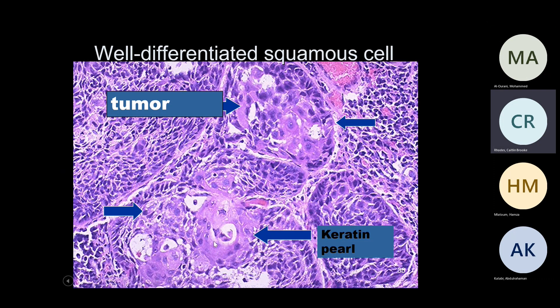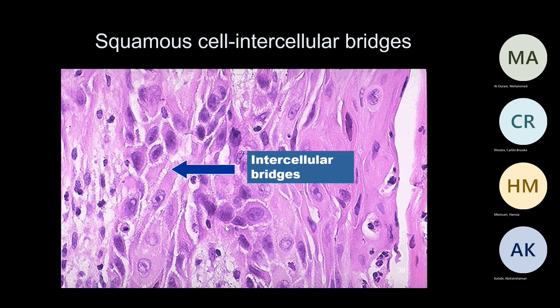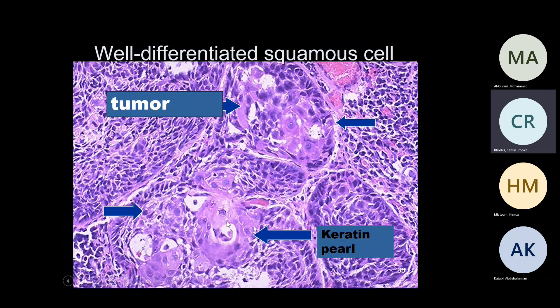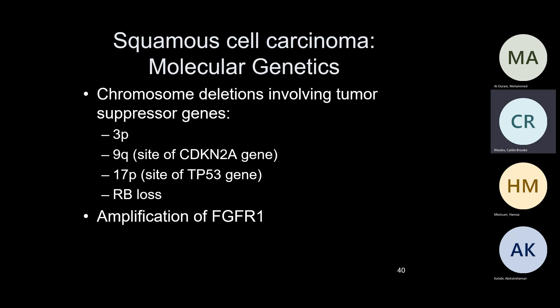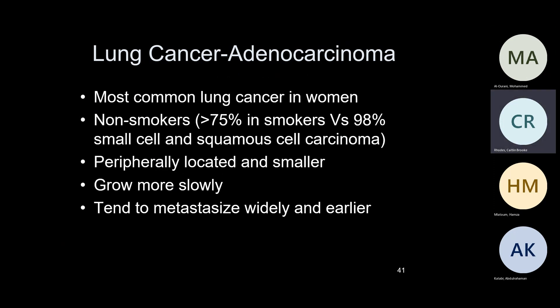In histology, you see keratin pearls in the nests of tumor cells and so-called intercellular bridging — desmosomes between the cells. These are confined to squamous cells, whether squamous cell carcinoma of the oropharyngeal area, lung, or genitourinary area. There are several chromosomal deletions in patients with squamous cell carcinoma, and also amplifications in the FGFR1 gene.